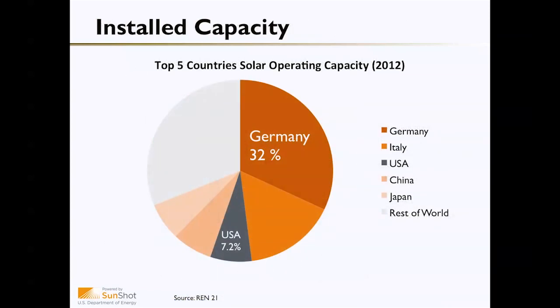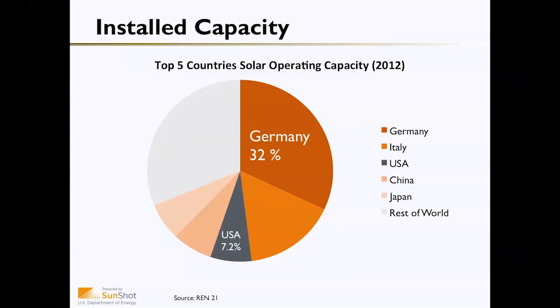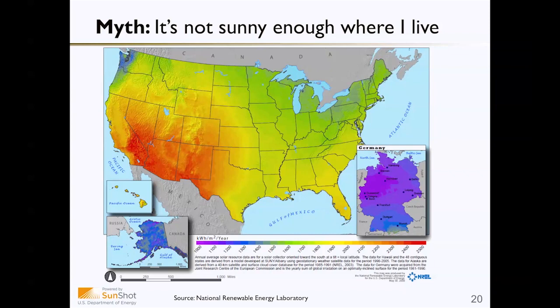What does all of this mean for the U.S. market? When we look at the numbers, we find that the U.S. is doing reasonably well — we currently have about 7.2% of the world's installed capacity. However, we're behind Italy and Germany, which has more than four times the installed capacity of the U.S. at 32%. The amazing thing about Germany having 32% of the world's solar market is that it isn't a particularly sunny location and it's much smaller than the United States, so there's a real opportunity in the U.S. to take advantage of a solar resource far better than Germany's.